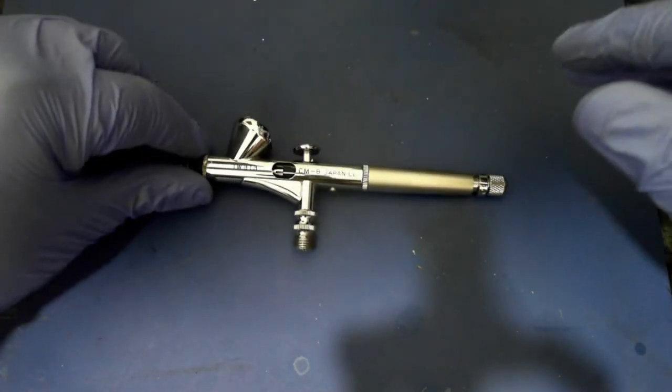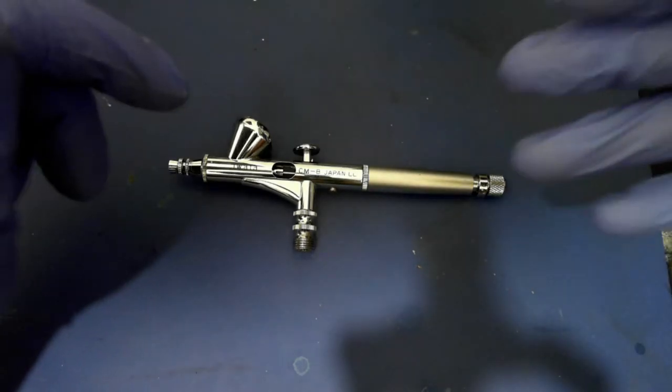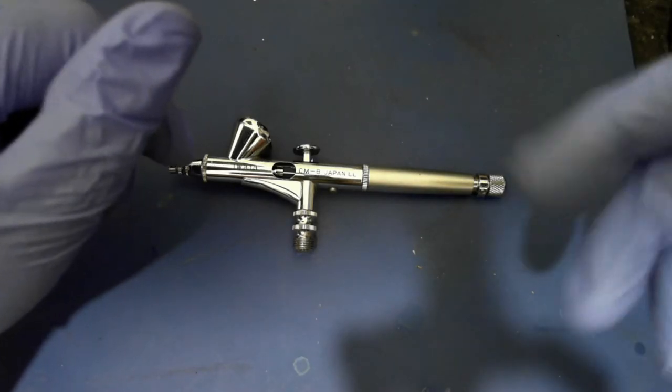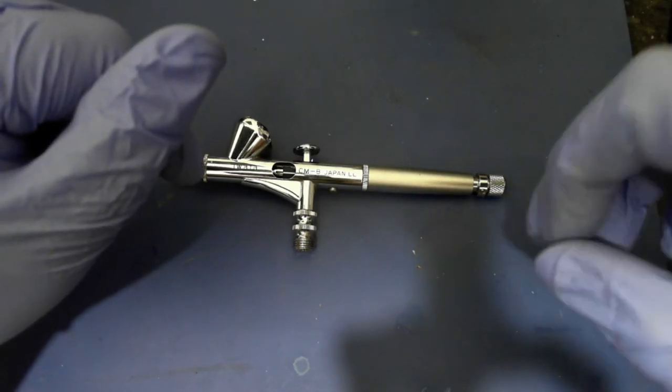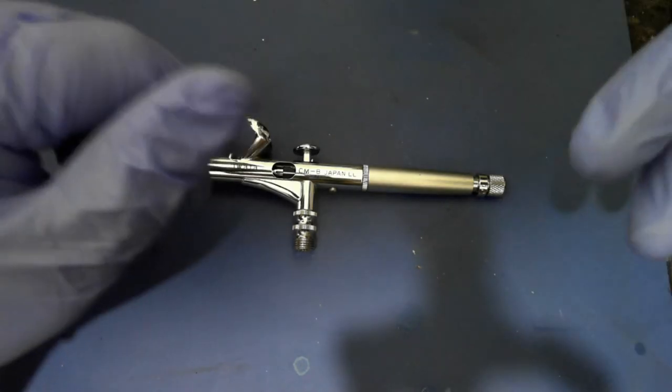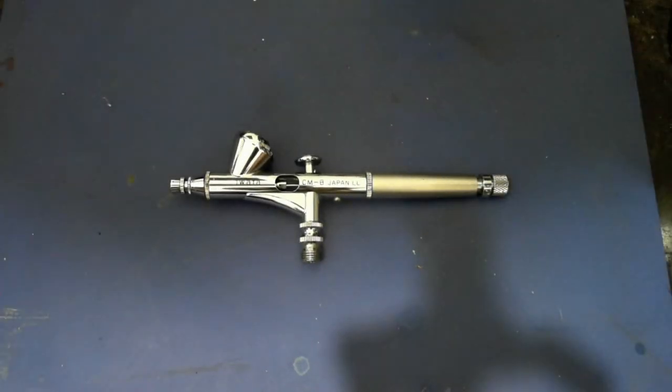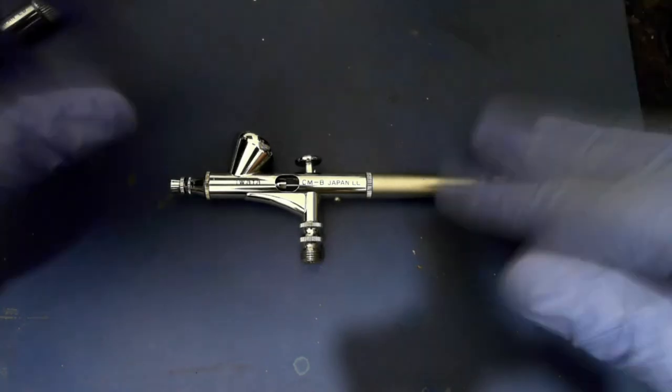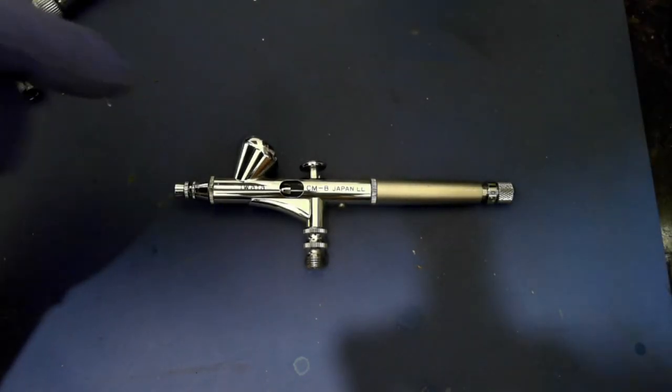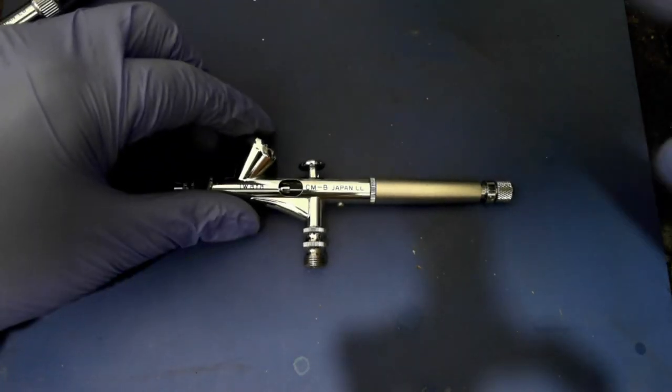External mix airbrushes, that I don't have and I don't want to use ever, have the air exiting the airbrush before mixing with the paint. This is a much simpler system and the type that was used in most single action airbrushes in the past. Now most of the airbrushes have the internal mix system, which is what I totally prefer. Don't buy external mix.